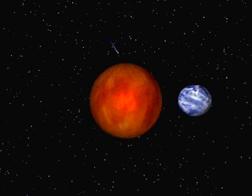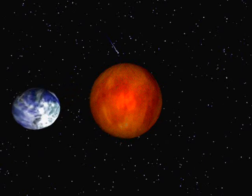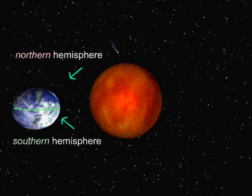To help scientists understand and explain to others how to find places on Earth, scientists use imaginary lines. The first is the equator. The equator is an imaginary line around the outside of the center of the Earth. The equator divides the Earth into two parts. The upper part is called the Northern Hemisphere. The lower part is called the Southern Hemisphere.